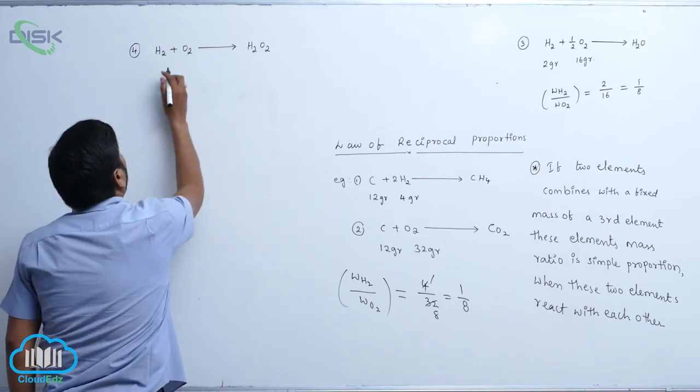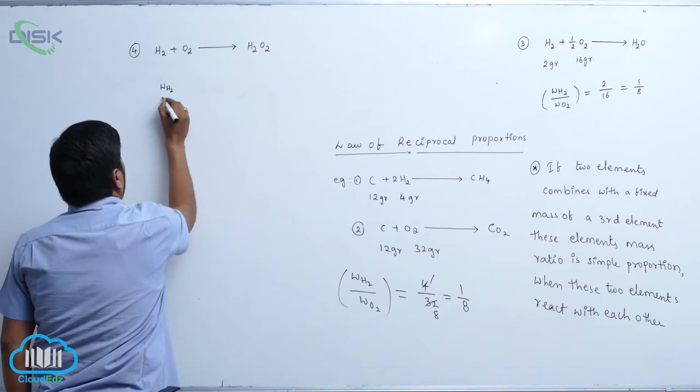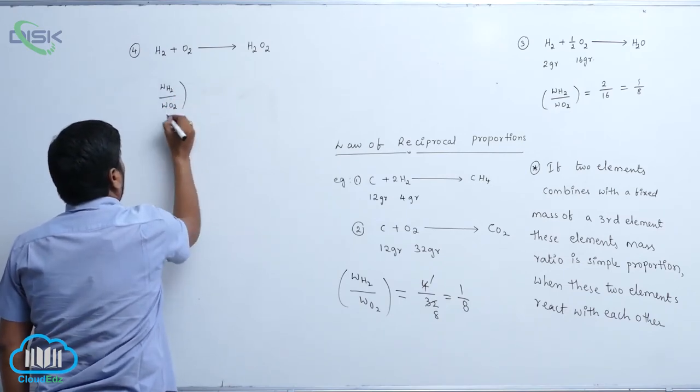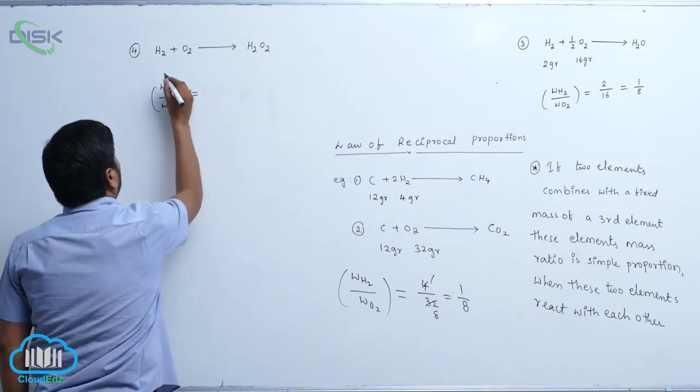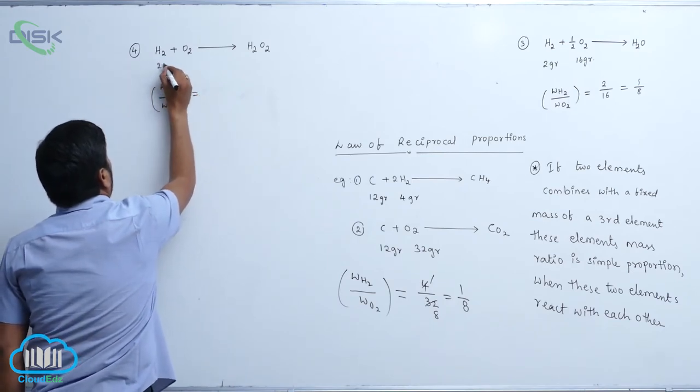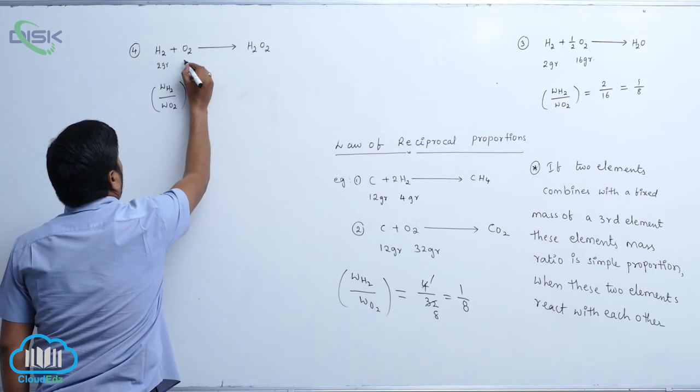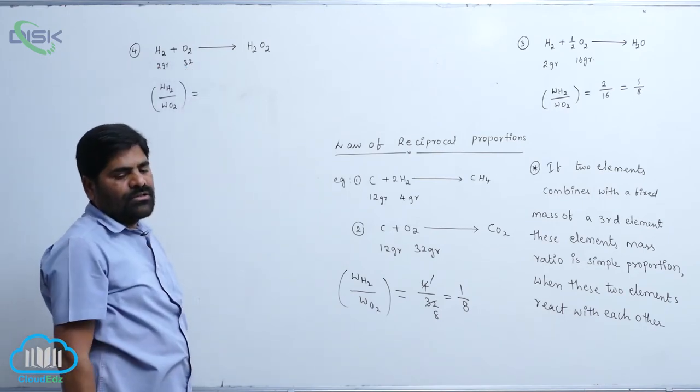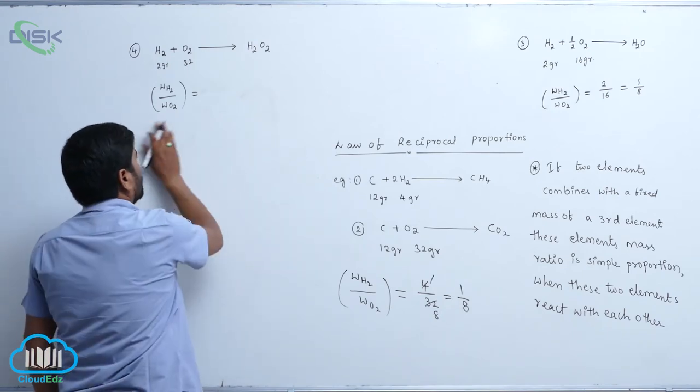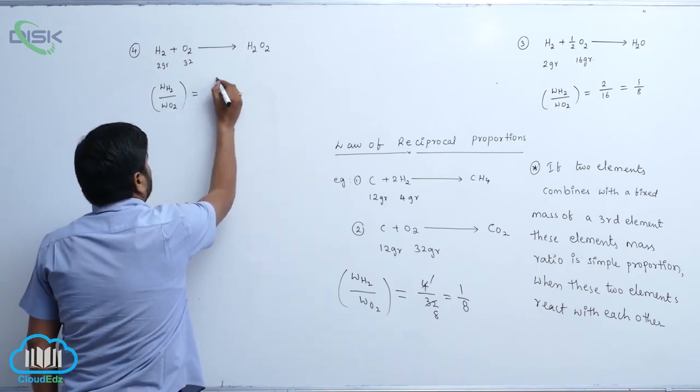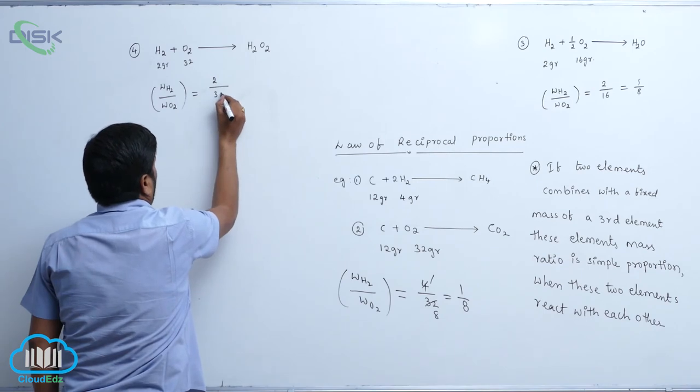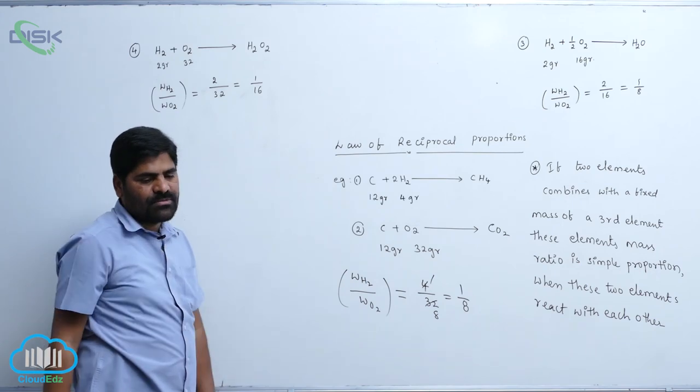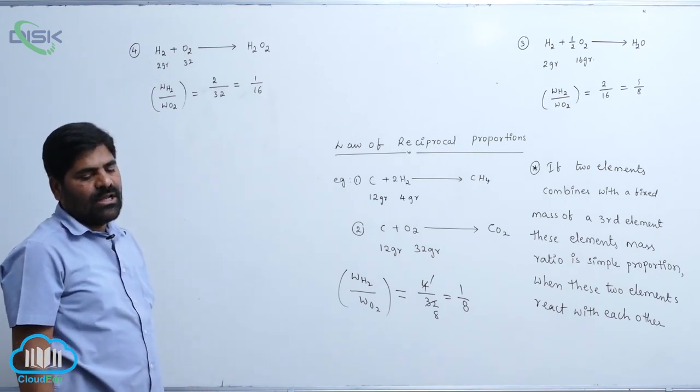weight of H2 by weight of O2 equals to, this is 2 grams. Here is 32 grams. 2 grams and 32 grams. So therefore, this is 2 by 32 equals to 1 by 16 grams. Which grams? 1 by 16 grams.